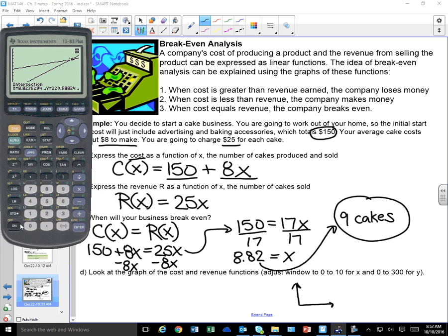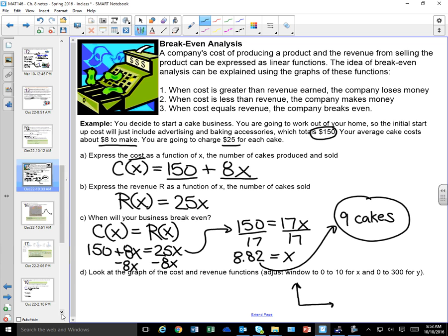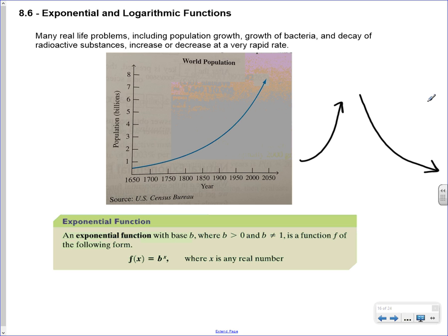That was 8.4. We skip 8.5, going right into 8.6. Section 8.6 is all about exponential and logarithmic functions. This is very useful because many real-life problems — including population growth, growth of bacteria, and decay of radioactive substances — increase or decrease at a very rapid rate, more rapid than what a linear function would show. We need a different type of function to explain data that looks like that, and what we use is the exponential function.